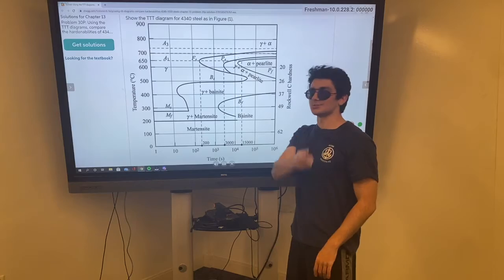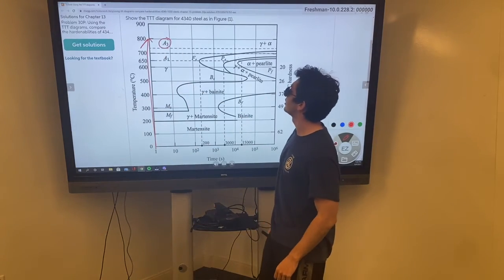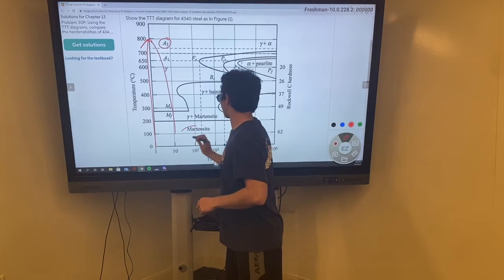Now, let's weld it. We're going to austenitize it. We're going to raise it above A3 and then we're going to cool it. Boom! Martensite.